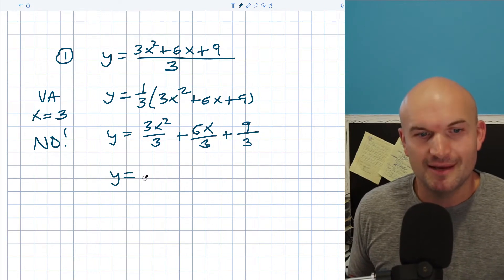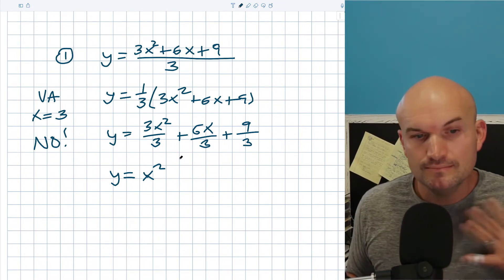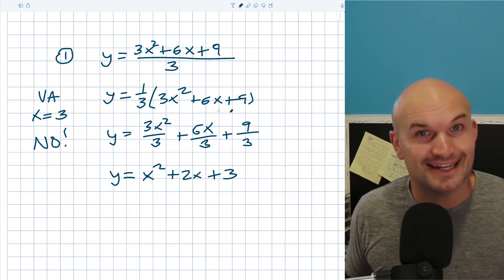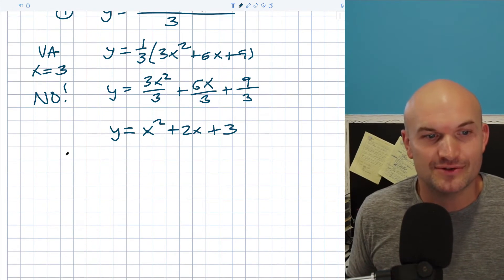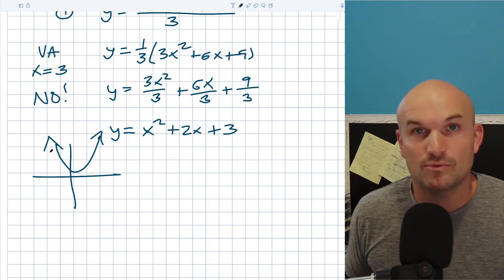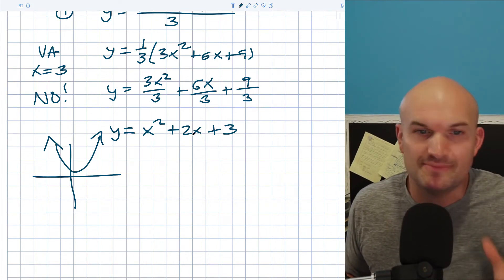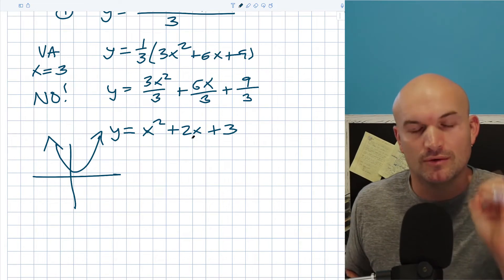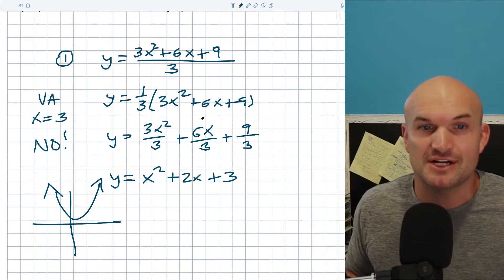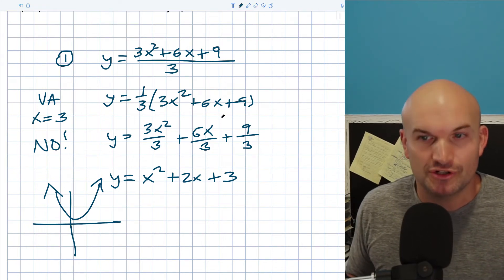When you simplify this rational expression, what you actually get is x² + 2x + 3, which is a quadratic. A quadratic equation is going to have that parabola shape — so the graph is going to look something like a parabola with no vertical asymptote, no discontinuities. No matter what value you plug in for x, it's always going to be defined. Whenever you have just a number in the denominator, you don't have to worry about vertical asymptotes.